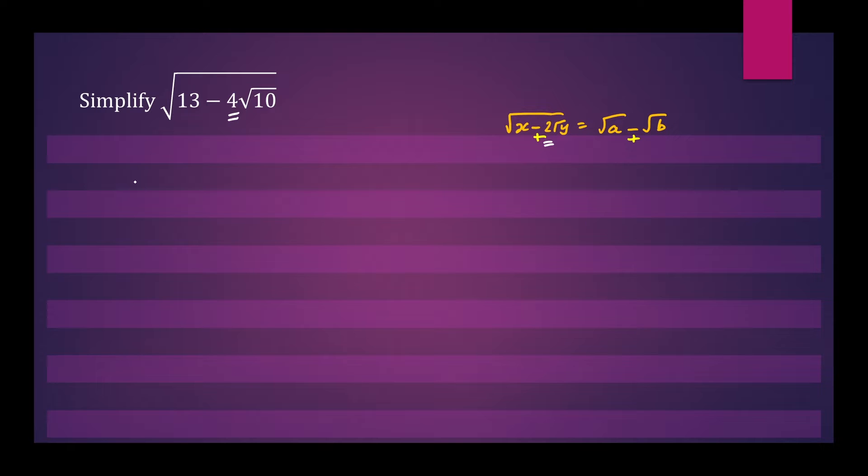Let's write down our question again. We have square root 13 minus 4 root 10 and we'll assume that we can write that in the form root a minus root b.